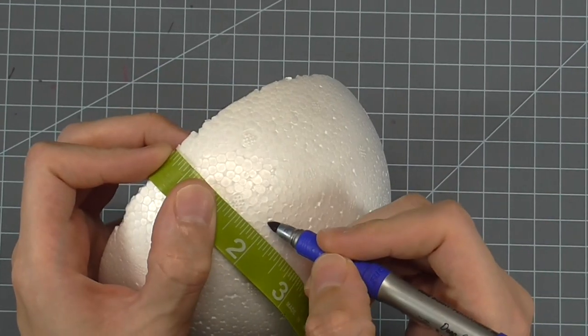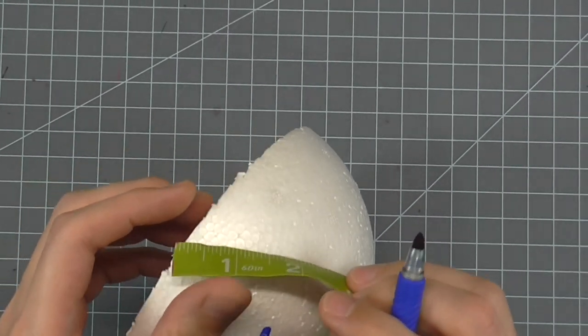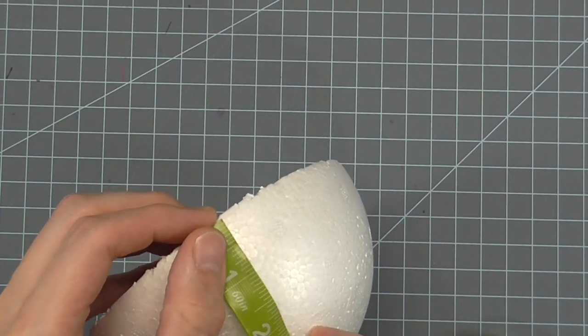Repeat this step on the other half of the styrofoam ball. It needs to be the exact same measurement.